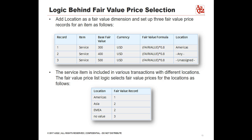When fair value dimensions are used on a fair value price record, the values you can select include Any and Unassigned, in addition to specific values for the dimension. When you select Any as the dimension value, the fair value price applies to all items regardless of their dimension value, unless another fair value price matches the dimension exactly. Unassigned equates to null, and when selected, the fair value price applies to items with no value selected for the dimension.